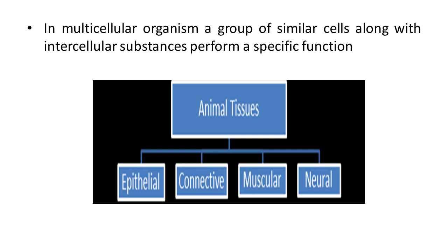In the previous chapter you already studied about plant tissue. Now we are going to study about animal tissues. The structure of cells varies according to their function, and that's why these tissues are classified into four categories: epithelial tissue, connective tissue, muscular tissue, and neural tissue.